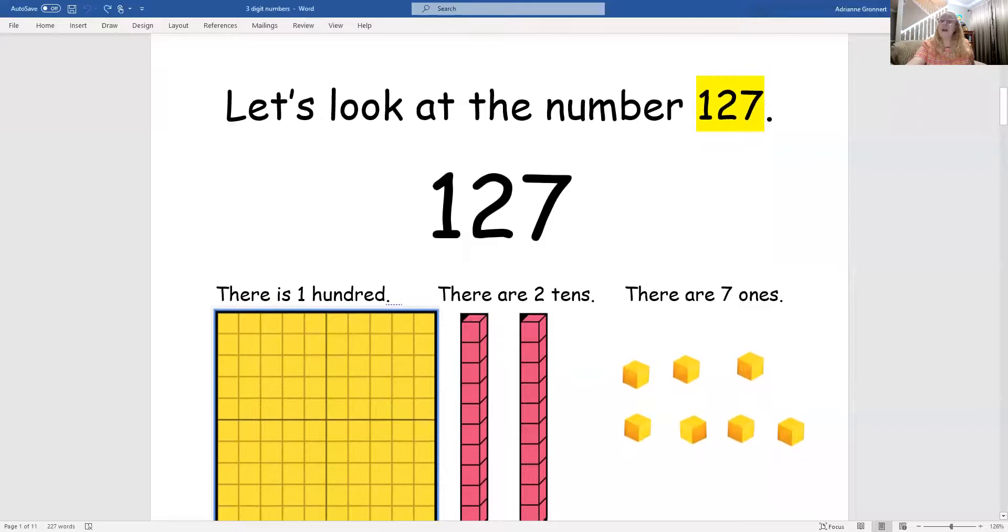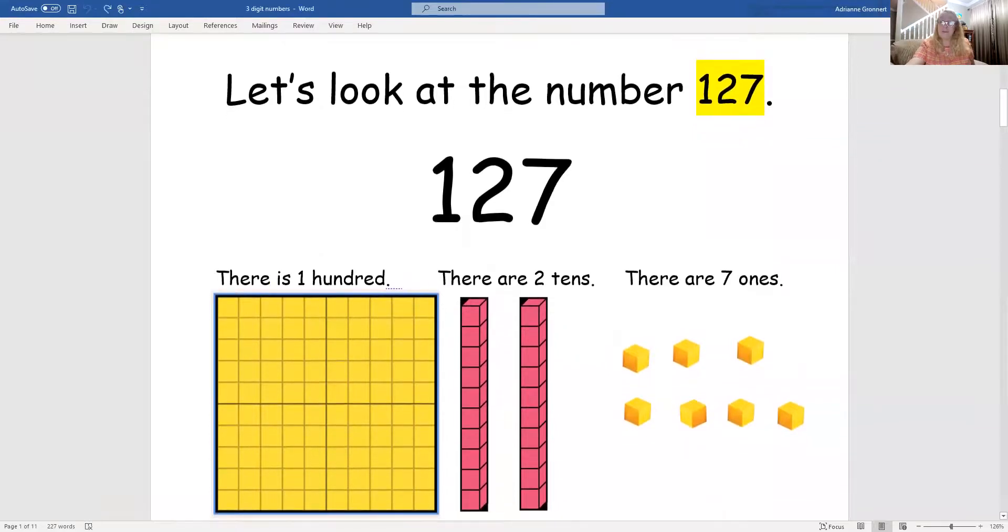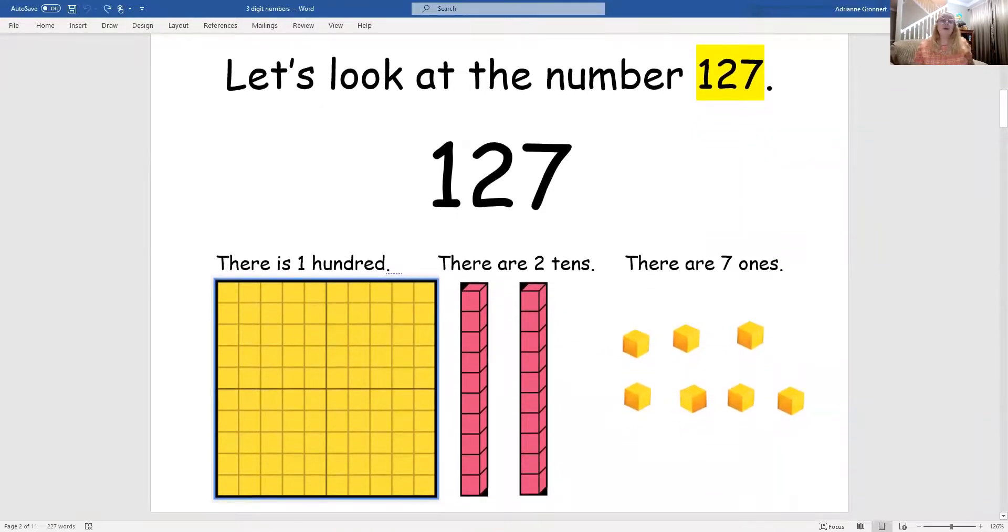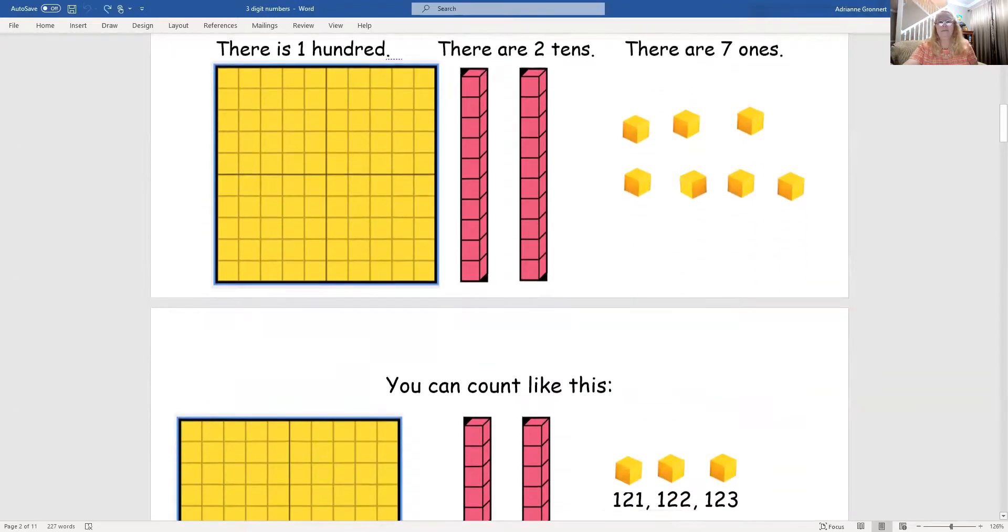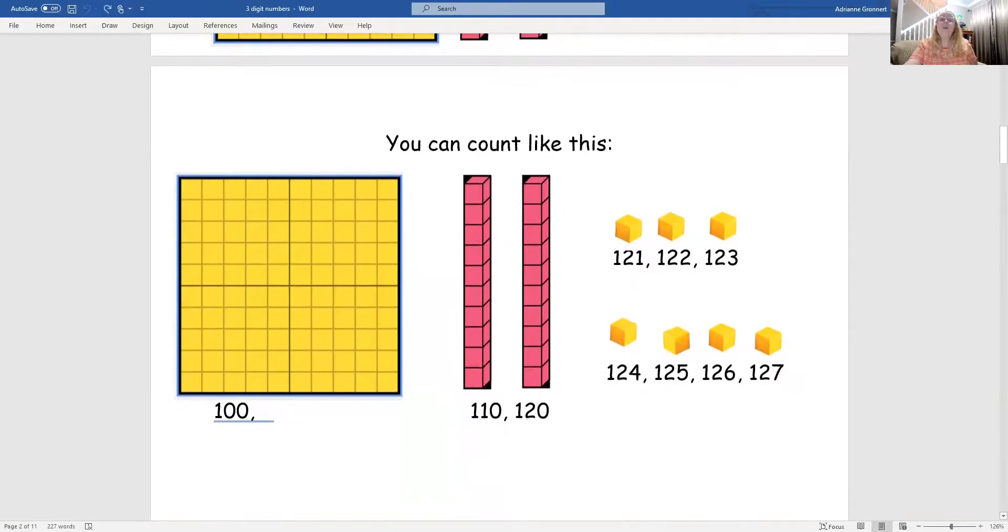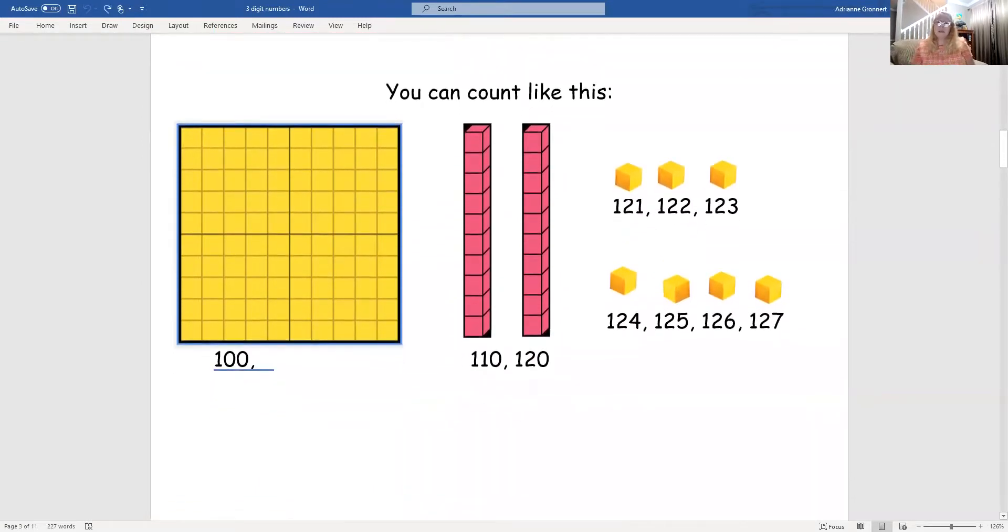Let's look at the number 127. In this number, there is 100, there are two tens, and there are seven ones. We can represent the hundreds, tens, and ones with base 10 pieces. You can count the base 10 pieces like this.